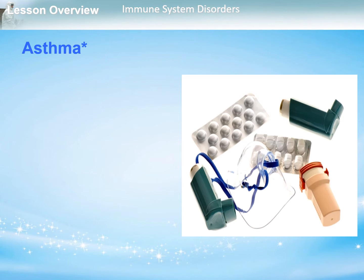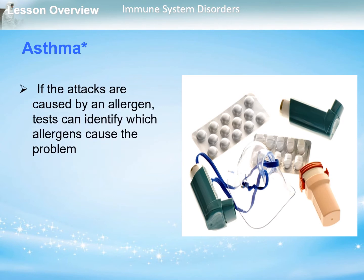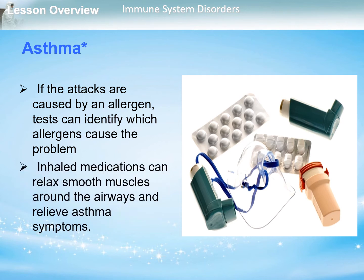Severe asthma can lead to permanent damage or destruction of lung tissue if treatment is not started early enough or if medications are not taken properly. There is no cure, but people with asthma can sometimes control the condition. If attacks are caused by an allergen, tests can identify which allergens cause the problem. Inhaled medications can relax smooth muscles around the airway and relieve asthma symptoms, as shown in the figure with some inhalers.